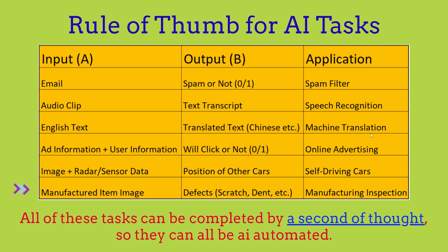Another example is email spam detection — we can create an automated AI spam filter to tell us if an email is spam or not. These are just some examples of the rule of thumb for AI tasks.